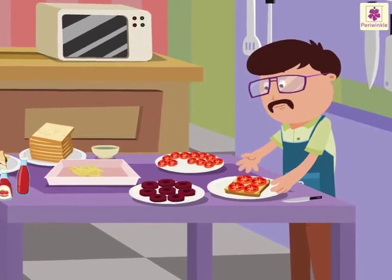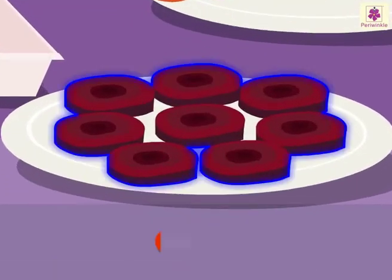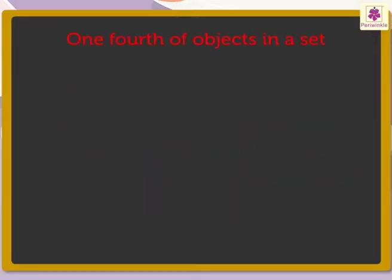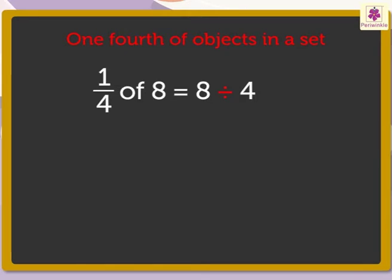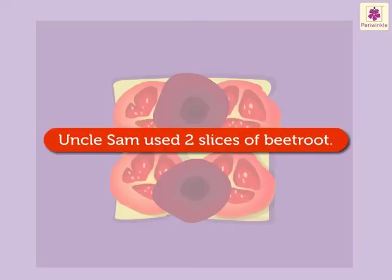Time to put beetroot in the sandwich. Uncle Sam has eight slices of beetroot. He uses one-fourth of the beetroot slices in the sandwich. To find one-fourth of eight, we divide it by four. Eight divided by four is equal to two. Hence, one-fourth of eight is two. Uncle Sam used two slices of beetroot.